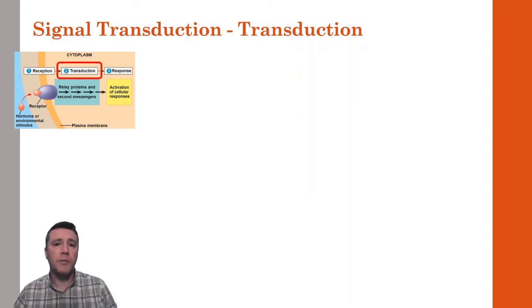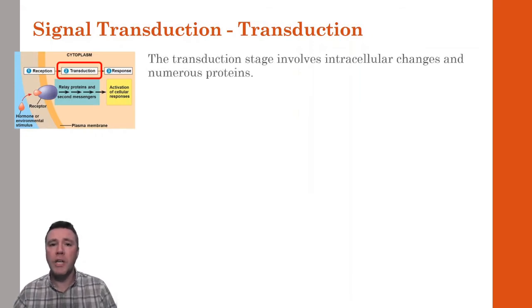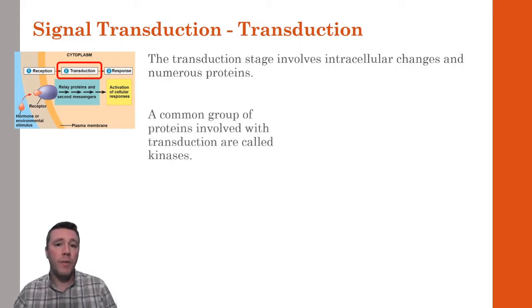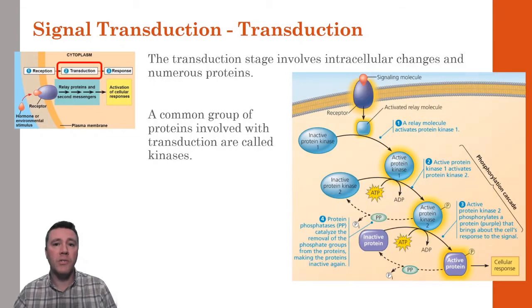The transduction stage takes place within the cell and involves numerous protein and non-protein components. An important family of at least 500 different kinds of proteins are called kinases. They are activated by the beta-gamma subunits of G-proteins and relay a signal from protein to protein by utilizing ATP to phosphorylate subsequent proteins to activate them. As this model demonstrates, in a phosphorylation cascade, a kinase protein becomes activated when it is phosphorylated, which, in turn, leads it to phosphorylate the next kinase in the chain and so on, ultimately resulting in a cellular response.